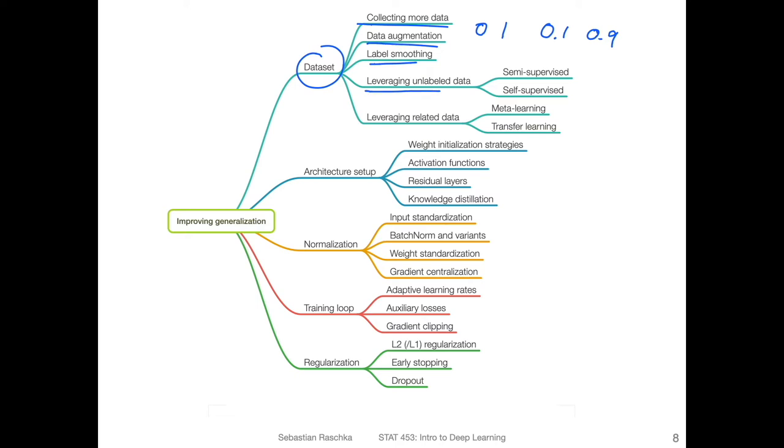Then a big topic is leveraging unlabeled data. We talked about this a little bit in the introduction to this course. One approach is semi-supervised learning, which is essentially about leveraging unlabeled data by looking at how confident your classifier is. You fit your classifier on the subset of labeled data, and then you apply it to unlabeled data. For example, if you have a larger dataset where you have data points that are not labeled yet, and if the classifier is very confident for some of those, then you may consider the predicted labels as the true labels to make your training set larger.